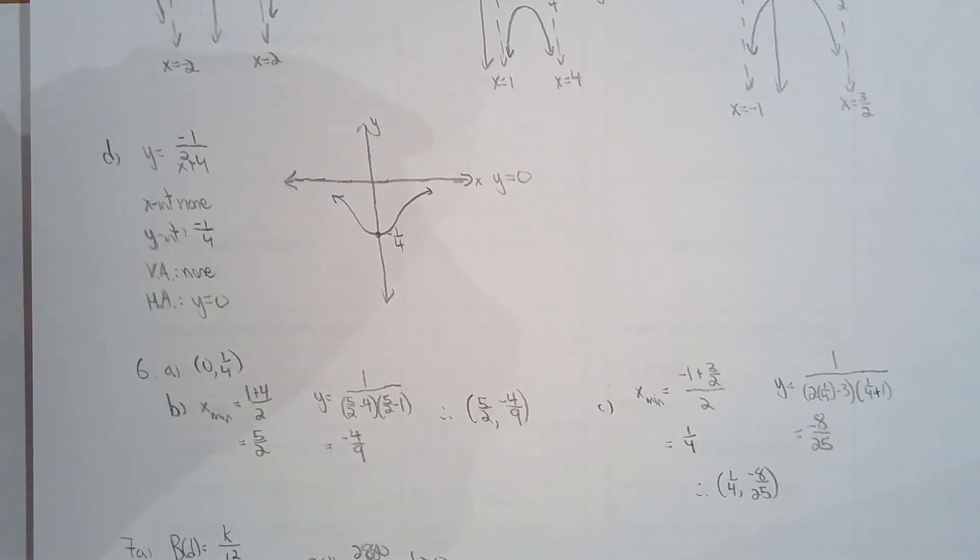So yeah, so 6b and 6c, I averaged it, and then I solved for the y-coordinate. And then I can tell you what the local min point is for 6b and 6c.